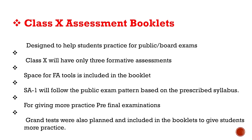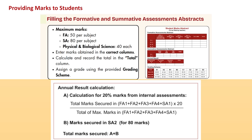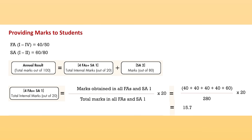Assessment booklets for Classes 6 to 9 include only CBA exams, except Class 10. Regarding providing marks to students: maximum marks in FAs is 50 per subject and in SA is 80 per subject. To calculate internal marks, for example, a student scores 40 marks in FAs and 60 marks in SA.